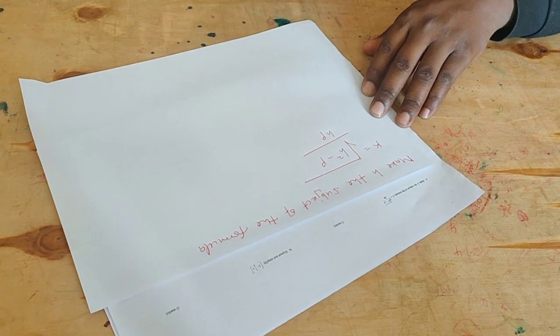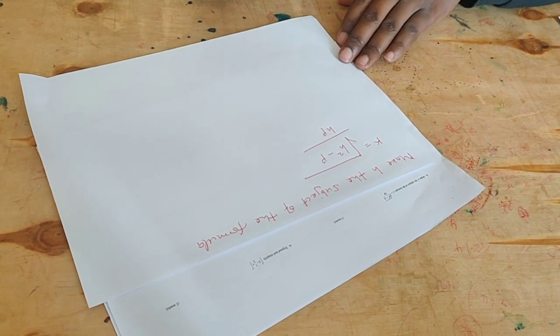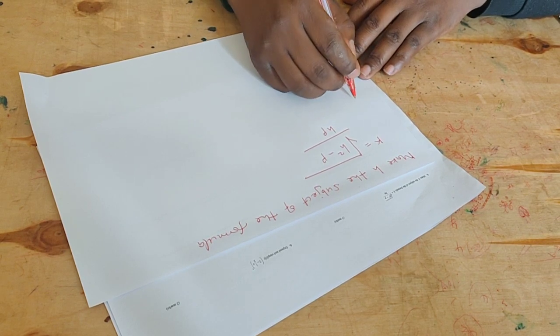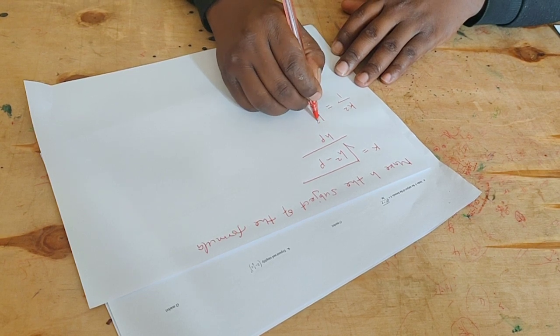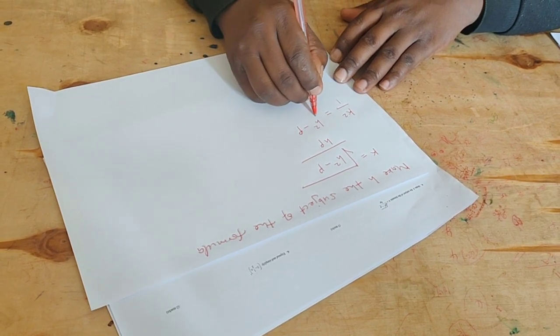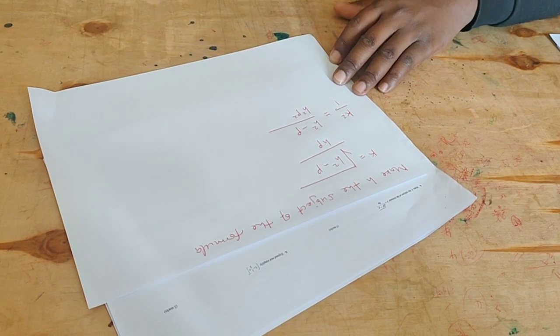First of all, because of the root, you have to square everything across the board. That is, k squared equals h squared minus p, all over h squared p squared. How do you remove the denominators? You multiply both sides by the LCM, which is h squared p squared.